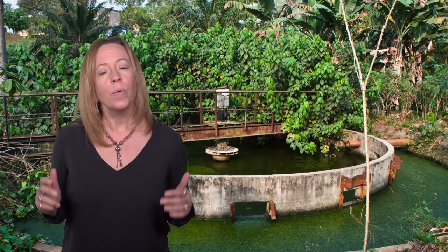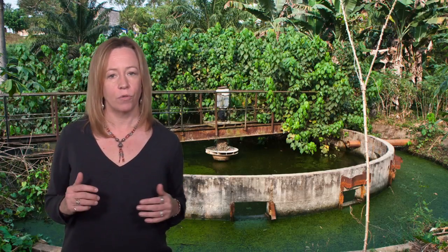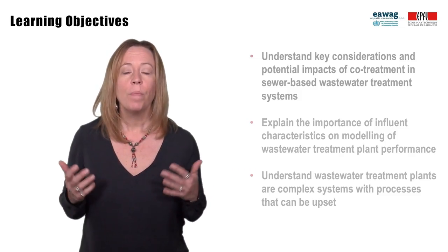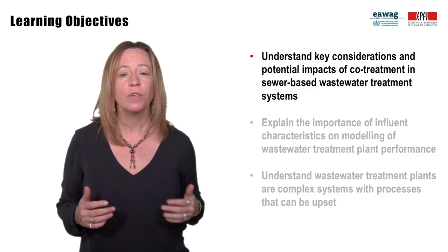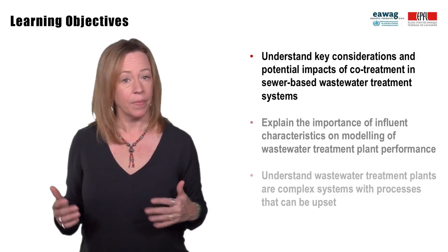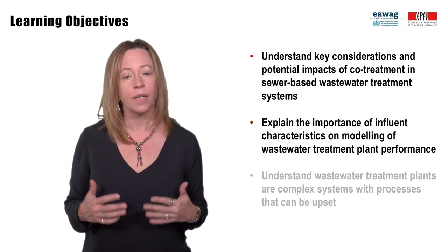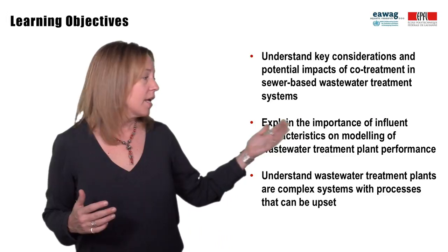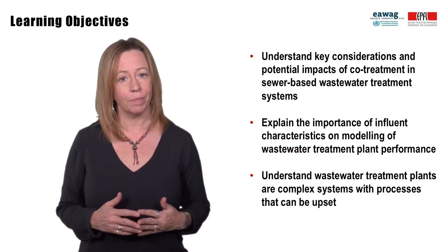In this module, we will learn about ways that fecal sludge and wastewater could be co-treated together. Following this module, you will be able to understand key considerations and potential impacts of co-treatment in sewer-based wastewater treatment systems, explain the importance of influent characteristics on modeling of wastewater treatment plant performance, and understand that wastewater treatment plants are complex systems with processes that can be upset.